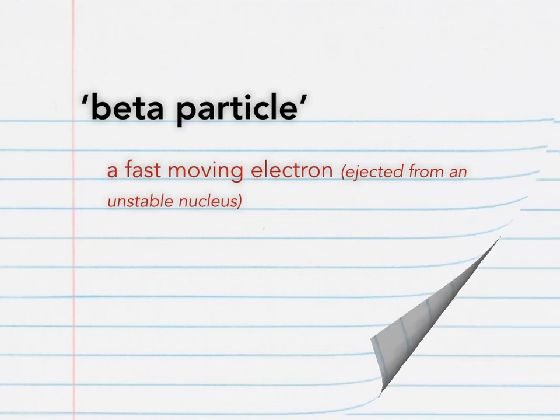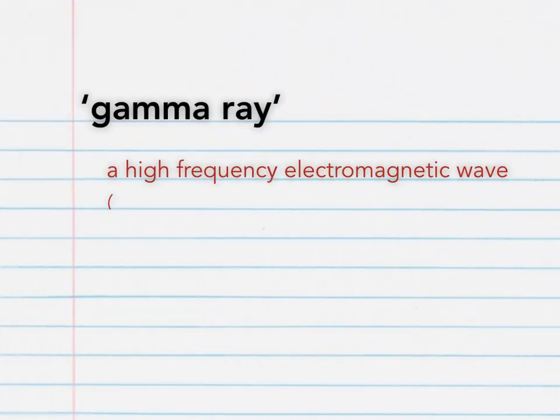Finally, we have the gamma ray. These are not particles, but are in fact a high-frequency electromagnetic wave ejected from an unstable nucleus. Gamma rays travel at the speed of light and are very weakly ionising.